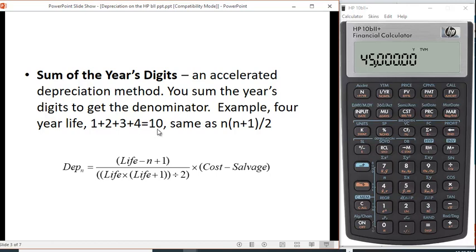That's pretty easy to do, but if you had something that lasted longer than that, say 10 years or 20 years, it'd be quite tedious to add it up. So there's a formula: n times the sum of n+1 divided by 2. You can check: 4 times 4+1 is 5, 5 times 4 is 20, divided by 2 gives us 10. So that's the denominator. This is the same thing except we substituted the term life for n. In the numerator, it's life minus n plus 1, and then you're going to multiply by cost minus salvage value.